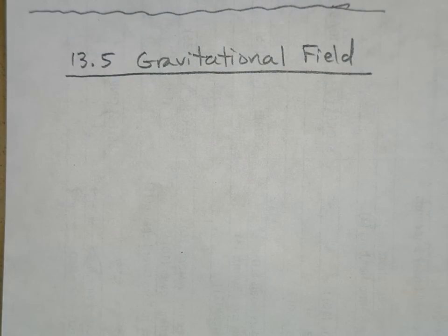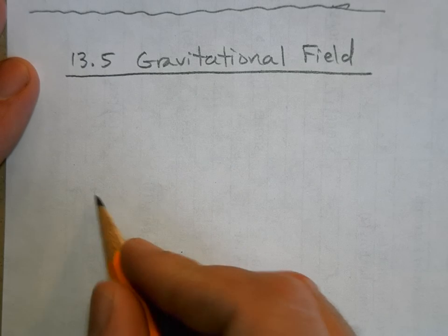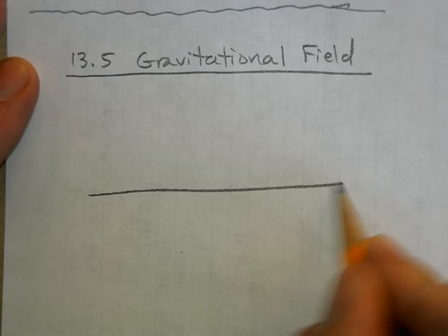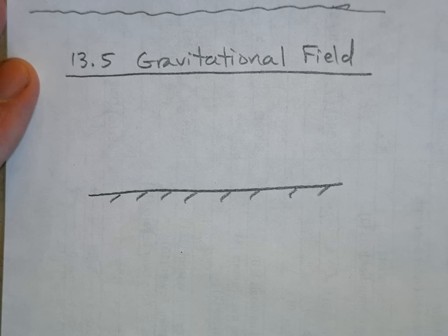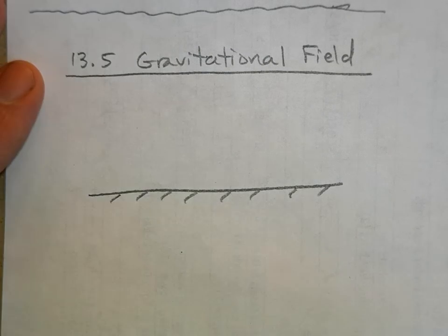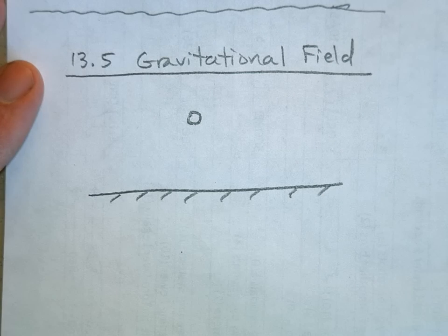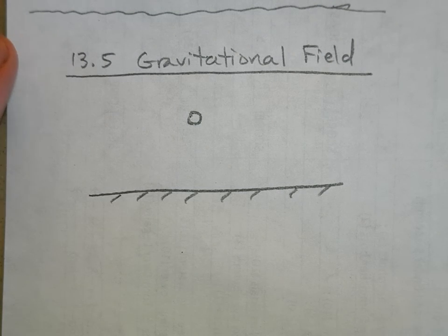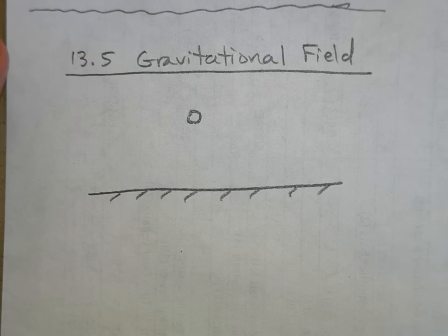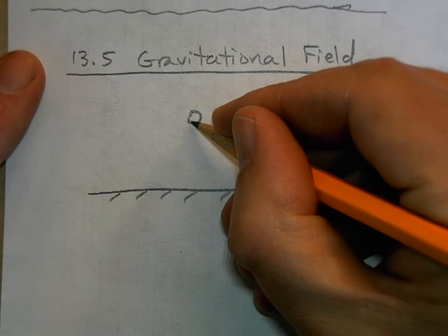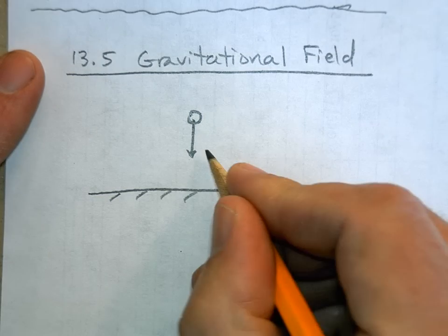We're going to define what the gravitational field is. It's pretty easy but it's a different way of looking at what gravity is. If you're near the earth's surface and you have some mass, you're a particle of some kind like a baseball or something, the earth's mass is pulling on your mass with this force of gravity.